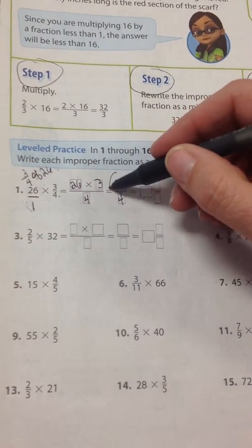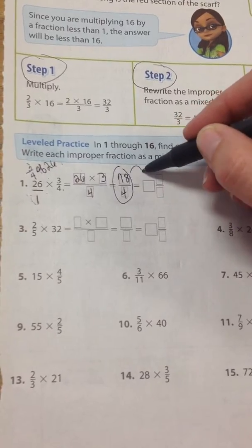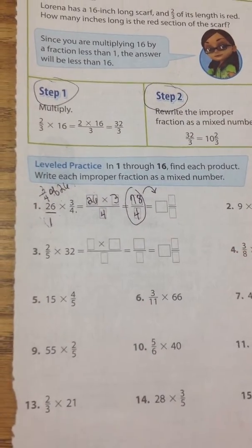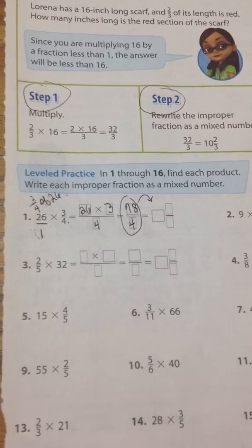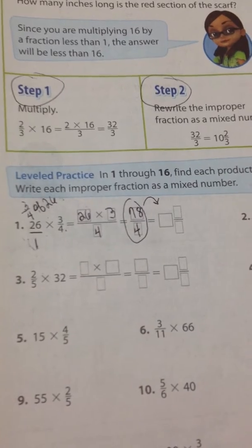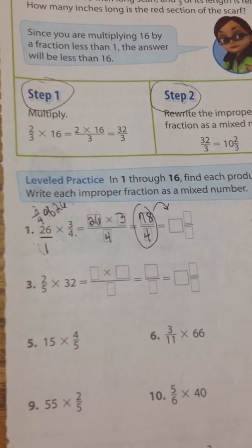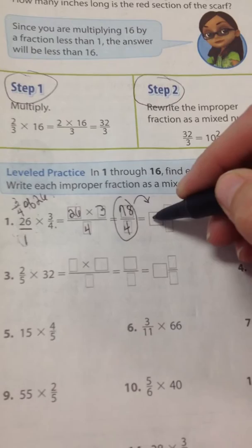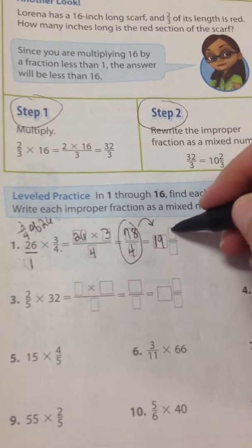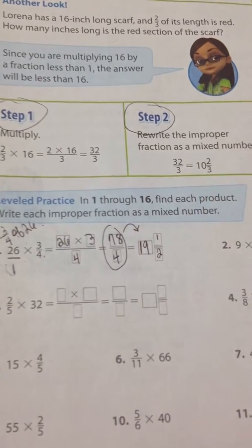And then this is an improper fraction. We need to convert it or rename it to a mixed number. You need to ask yourself how many times 4 goes into 78. Again, that calls for some side math. I'm just going to punch it in my computer, and that is 19 and a half. Okay, let's go to the next one.